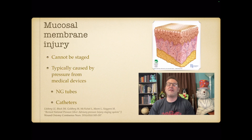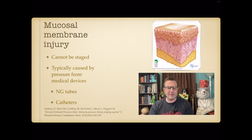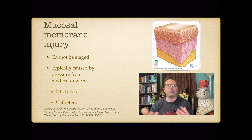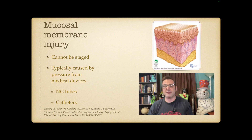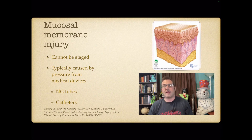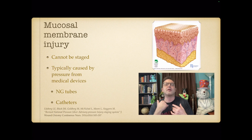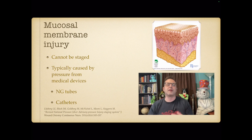The final category is mucosal membrane injury — a newer classification. These can't be staged because they don't follow the normal pattern of epidermis to dermis to muscle to bone. They're typically caused by pressure from medical devices such as NG tubes, catheters, nasal cannulas, and ventilation hoses. For example, an NG tube passes through the nasal cavity and esophagus — there's no bone there to measure injury depth against.